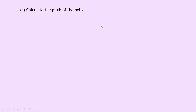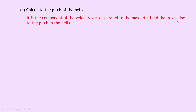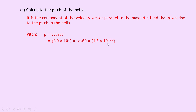Lastly, Part C asks us to calculate the pitch of the helix. It's the component of the velocity vector parallel to the magnetic field that gives rise to the pitch. To calculate the pitch — essentially speed times time — we call it small p, equal to V cos theta times the period T, where V cos theta is the parallel velocity component and T is the time for one revolution. Substituting: 8 times 10 to the 7 times cos 60 times 1.5 times 10 to the minus 10 gives 6.0 times 10 to the minus 3 meters.